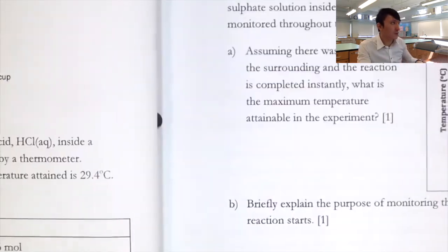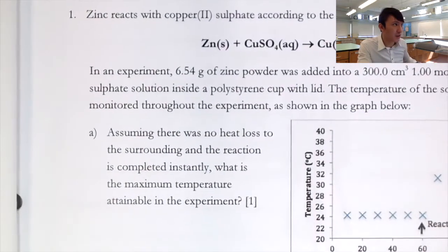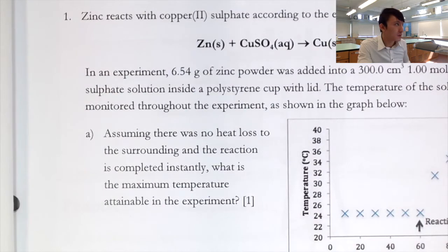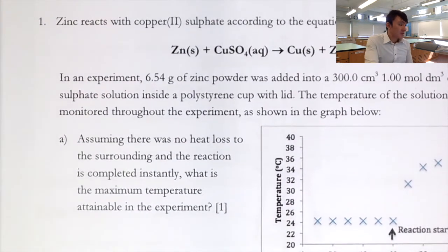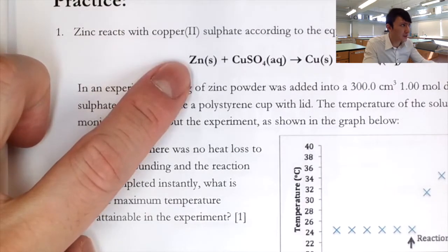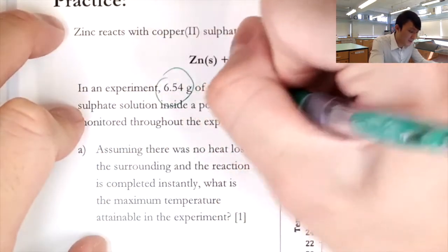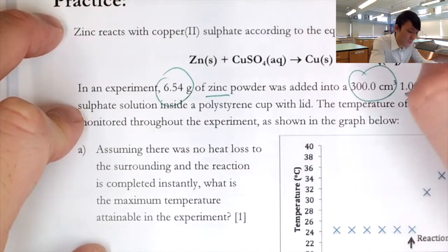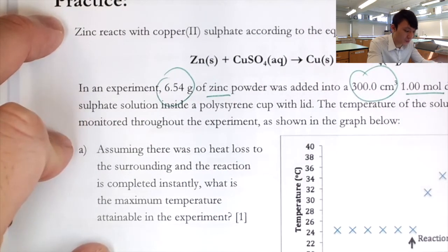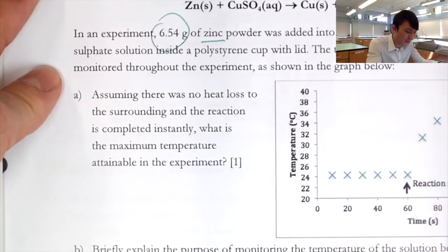Now let's have a look at the practice question. Pause the video, try it yourself, and then check the answers. Zinc reacts with copper(II) sulfate — a displacement reaction, since zinc is more reactive than copper. A quantity of zinc is added into 300 cm³ of 1 mol/dm³ copper(II) sulfate solution in a polystyrene cup with a lid, and temperature is monitored throughout.